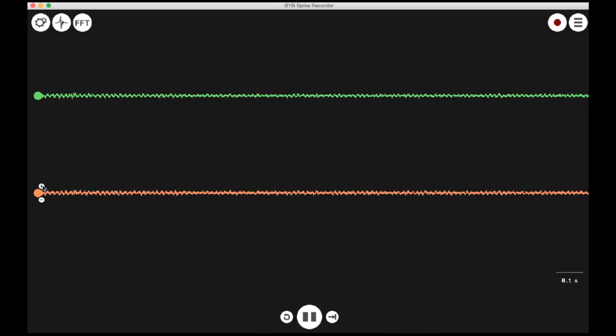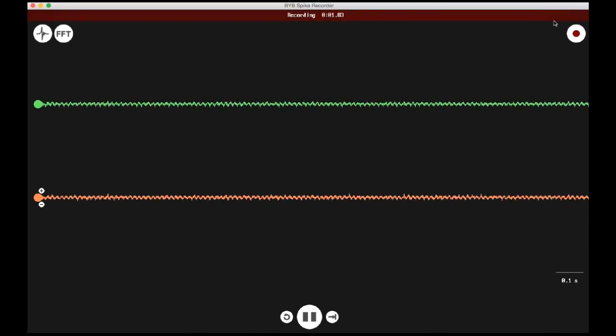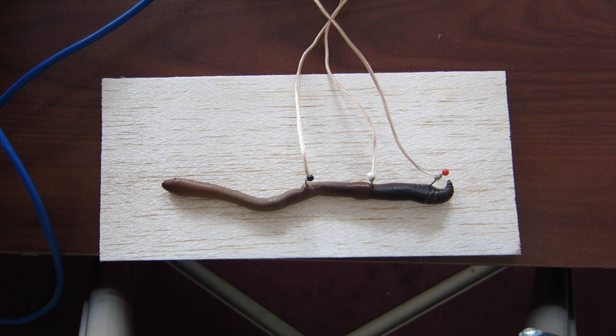Now since the worm is anesthetized, we will not see any spontaneous spiking activity, but we are ready to begin the experiment. Press the record button in the upper right-hand part of your screen to begin saving the data. And with a plastic probe, lightly touch the anterior end of the earthworm two to three times.